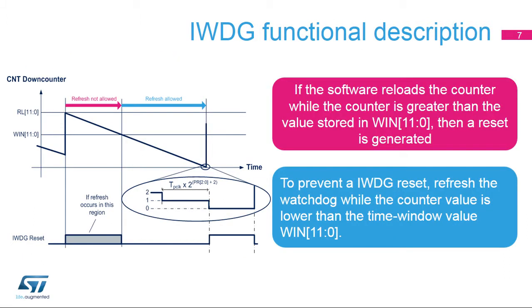This diagram illustrates how the Independent Watchdog operates. When the downcounter reaches zero, the Watchdog reset is activated. This happens when the application software did not refresh the watchdog on time. If the software refreshes the watchdog while the downcounter is greater than the value stored in the window register, then a reset is generated as well. To prevent a watchdog reset, the refresh must occur when the downcounter value is higher than zero and lower than the time window value.